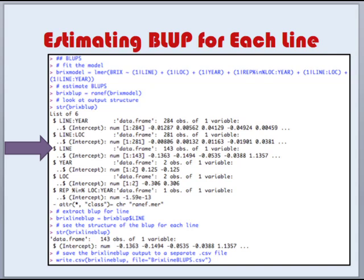If we use the structure command to look at our BLUPs, we'll see that we have BLUPs for line by year, line by location, line by itself, year, location, and rep within location by year. In this case we are only interested in the BLUPs for each line. We can extract those from the data and then save them to a separate CSV file using the write.csv command.